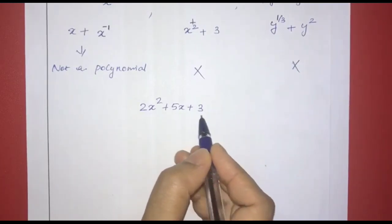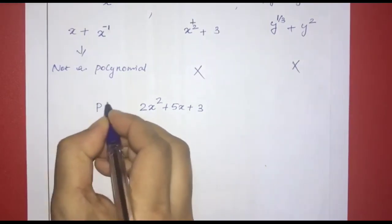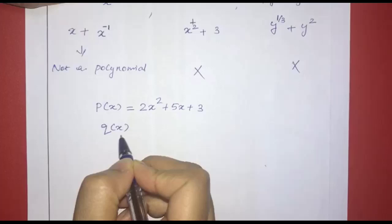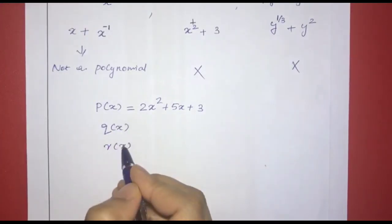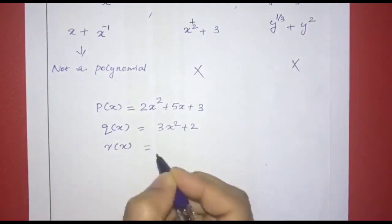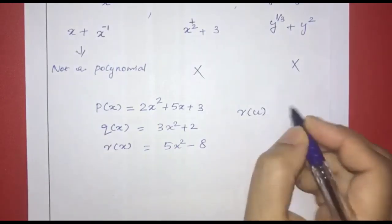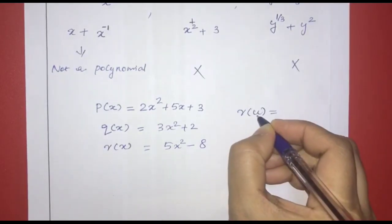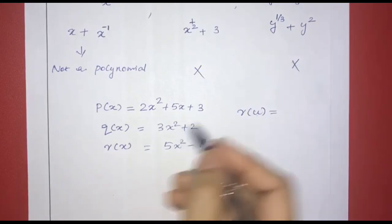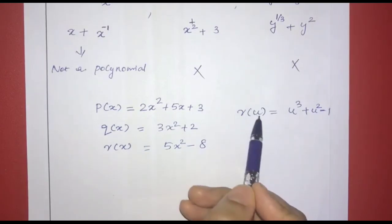Consider 2x squared plus 5x plus 3. We can denote a polynomial using p of x, q of x, or r of x. For example, p of x equals 2x squared plus 5x plus 3; q of x equals 3x squared plus 2; r of x equals 5x squared minus 8. We can also have r of u, where u is the variable in the bracket, for example r of u equals u raised to 3 plus u squared minus 1.